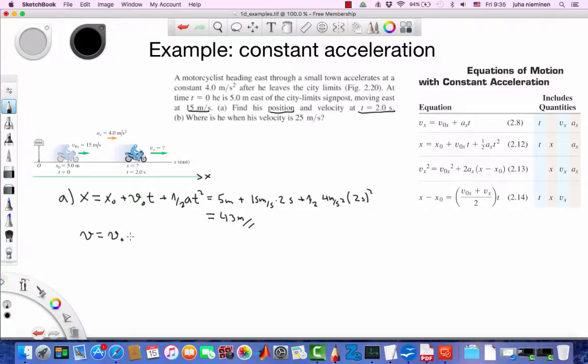v = v₀ + at. Initial velocity is 15 meters per second plus acceleration times elapsed time: 4 meters per second squared times 2 seconds. That's 8 plus 15, equals 23 meters per second. Check the units: meters per second. Seconds cancel the other second, so we get meters per second. We're consistent.